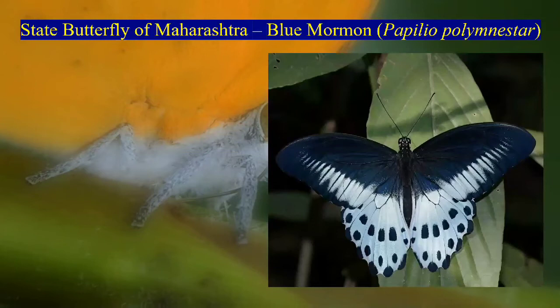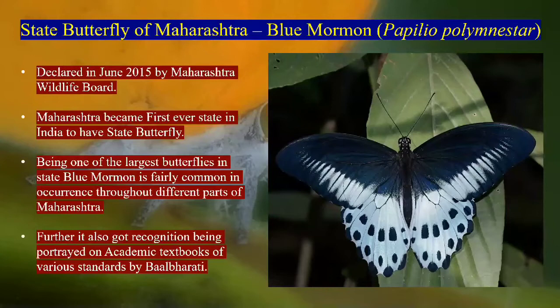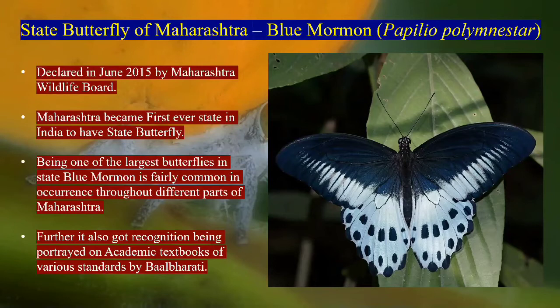Talking about Blue Mormon, the state butterfly of Maharashtra — it is one of the really beautiful and large butterflies found here and across India. In Maharashtra, it was declared the state butterfly in June 2015 by the Maharashtra Wildlife Board. Maharashtra is the first ever state in India to declare a state butterfly — a unique distinction.